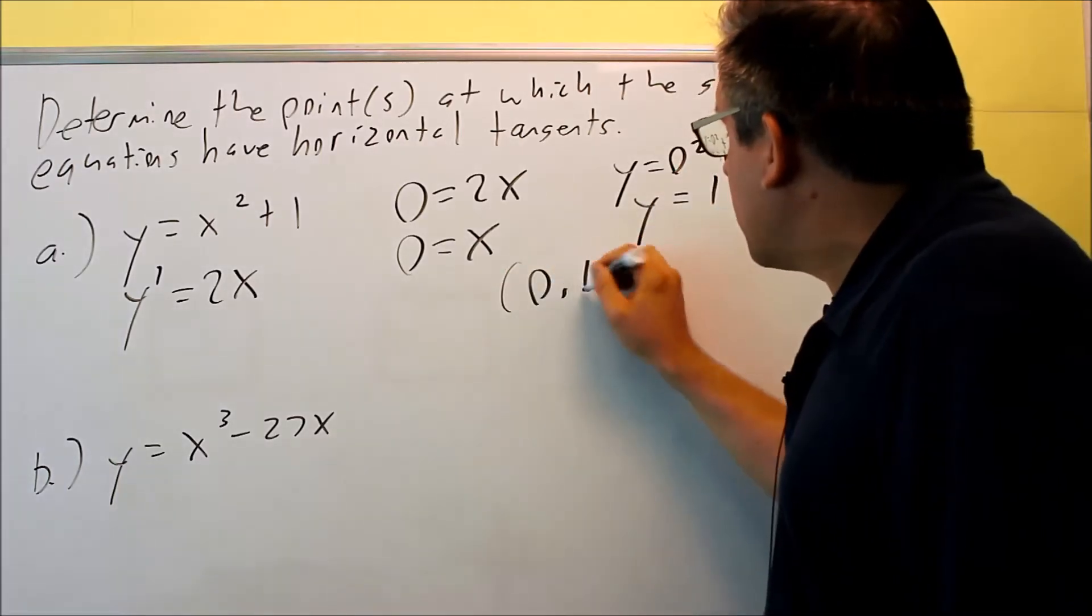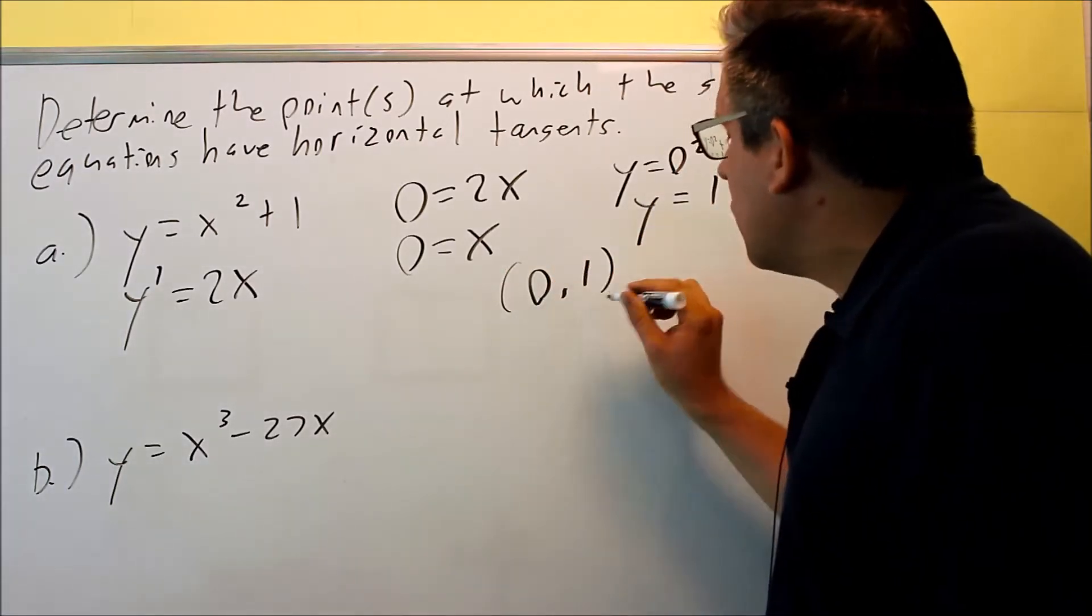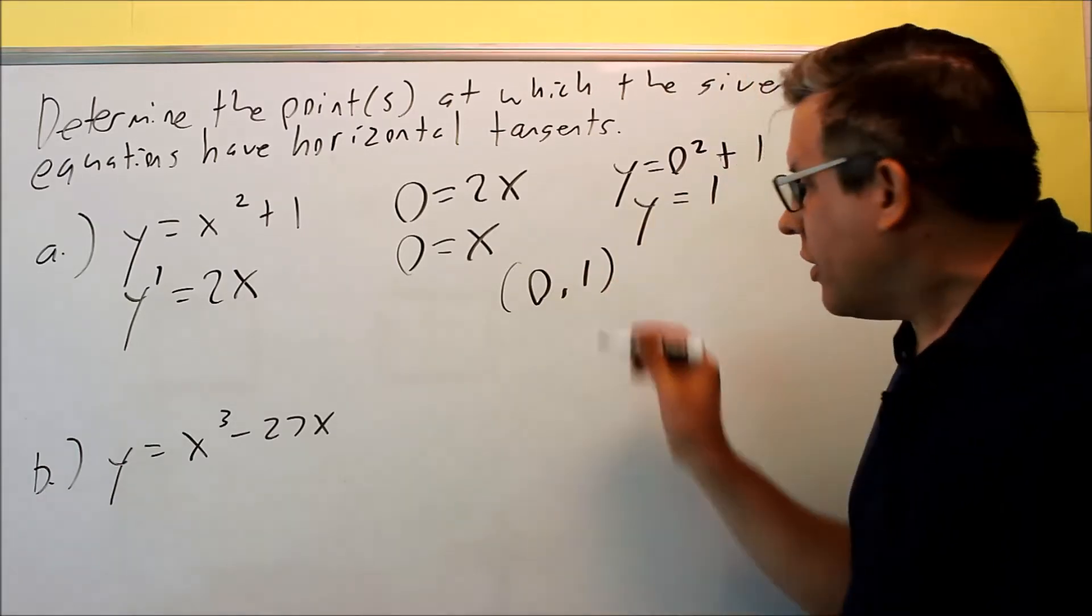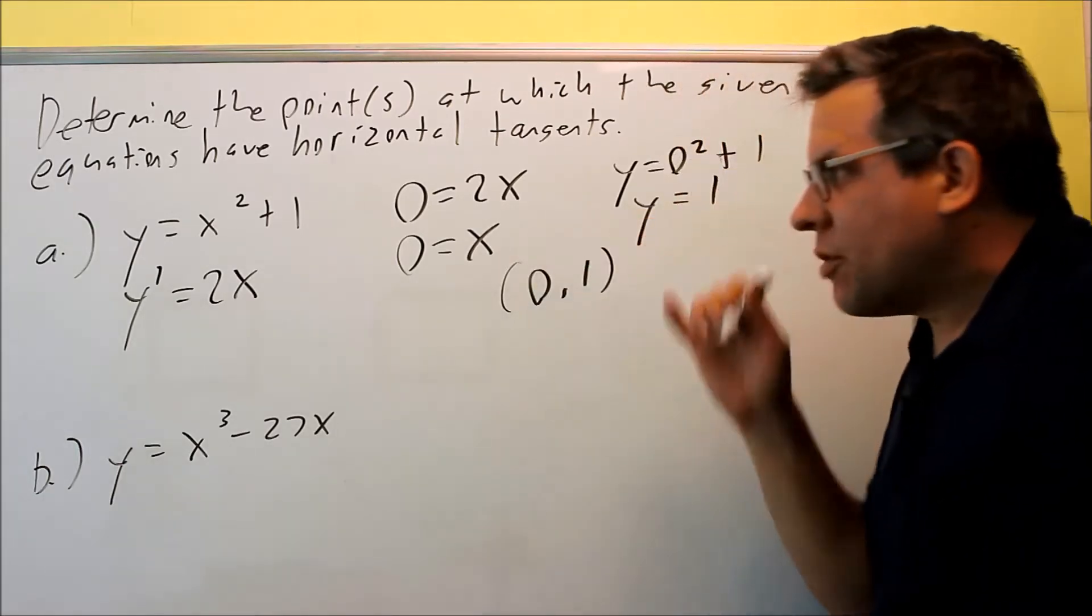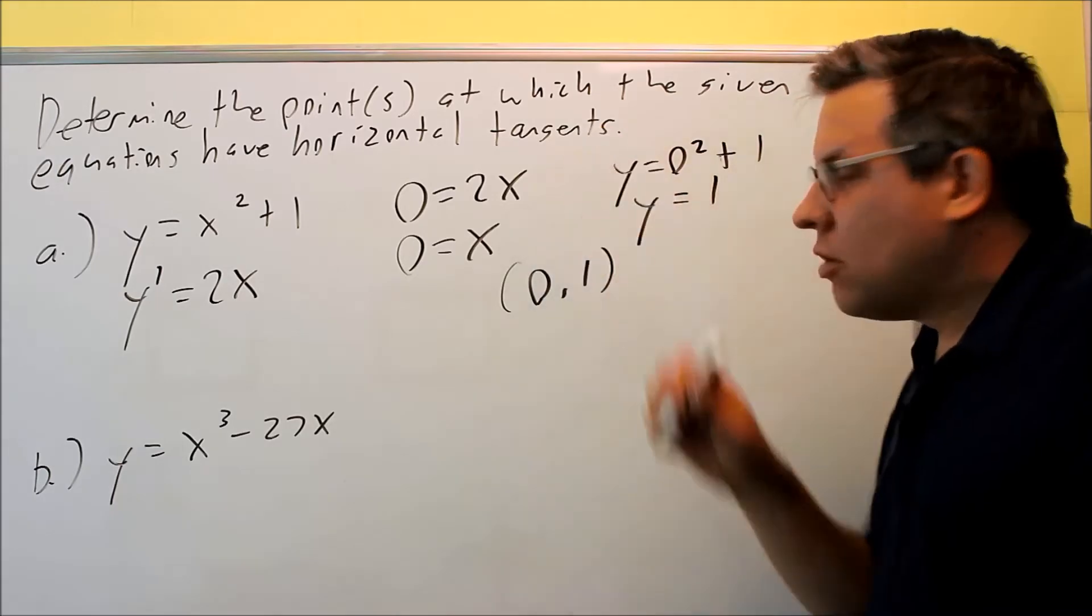So the answer that you'll write, the way you'll write it is like this, you'll put zero comma one. That's what they want as the answer, that's the point where there'll be a horizontal tangent.